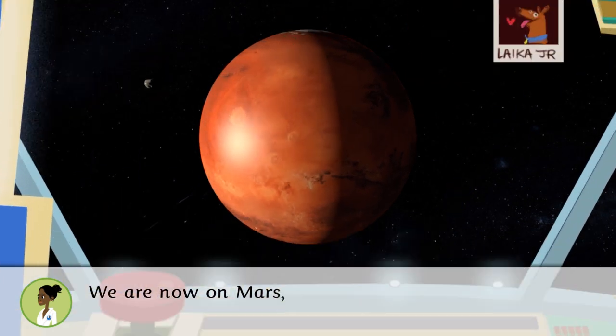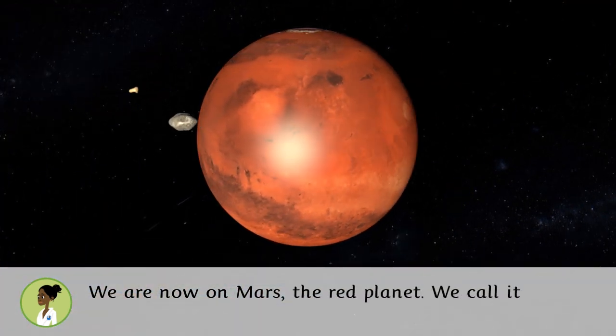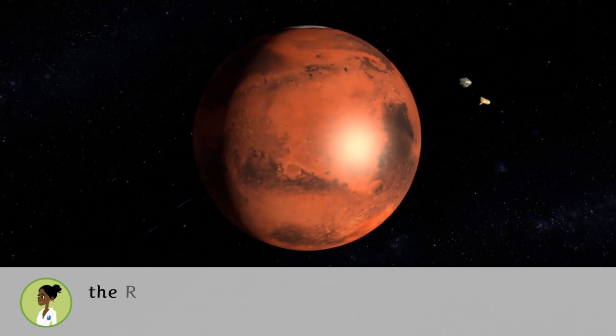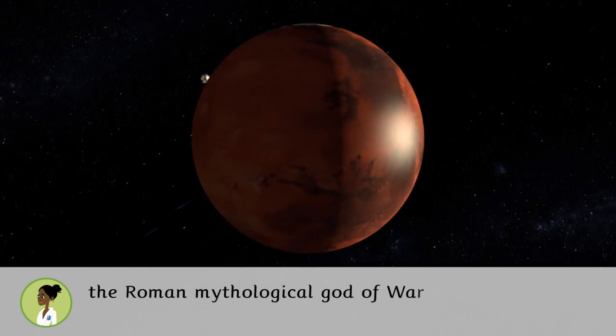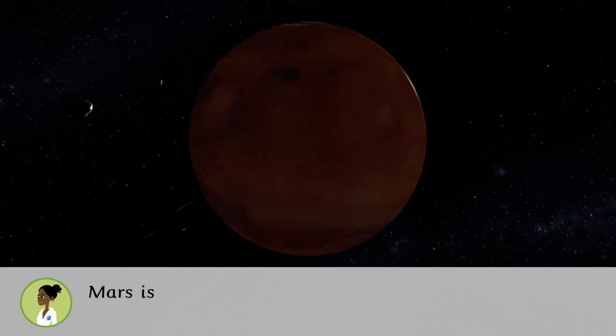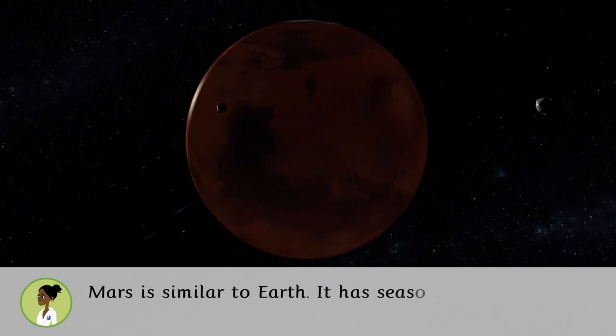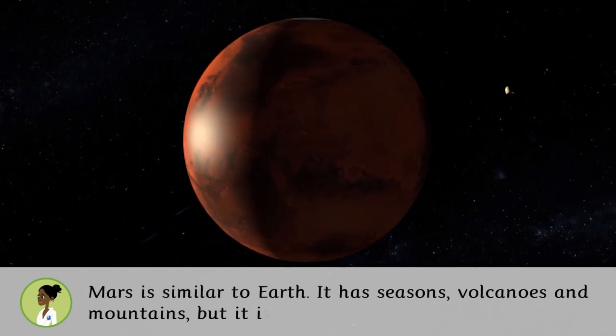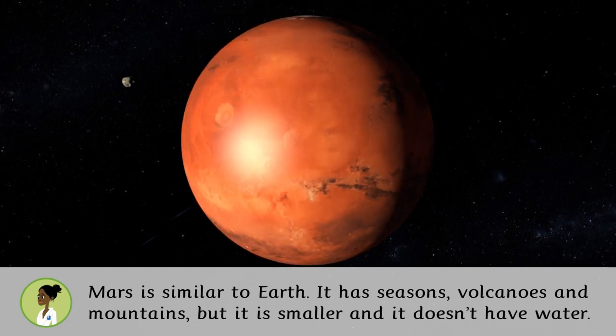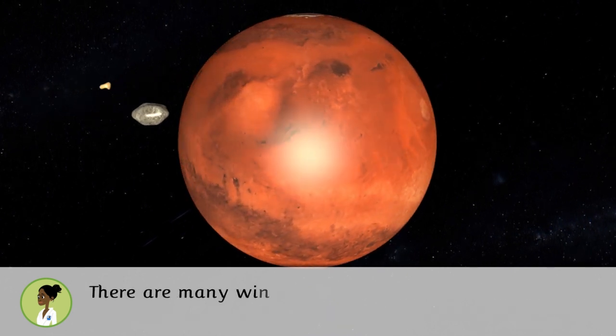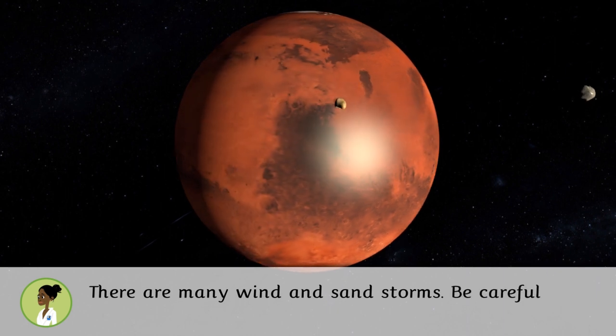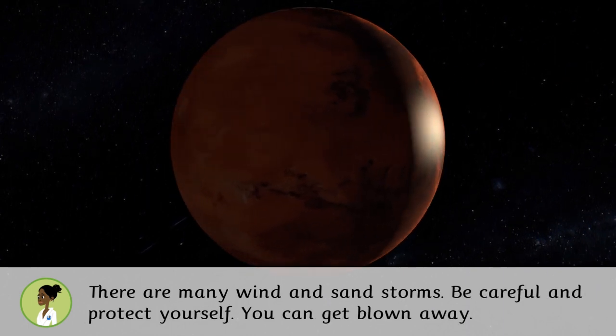We are now on Mars, the red planet. We call it that because of its color, but the name comes from the Roman mythological god of war. Mars is similar to Earth. It has seasons, volcanoes and mountains, but it is smaller and it doesn't have water. There are many wind and sand storms. Be careful and protect yourself. You can get blown away.